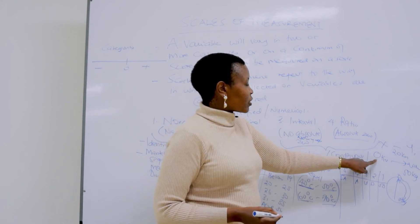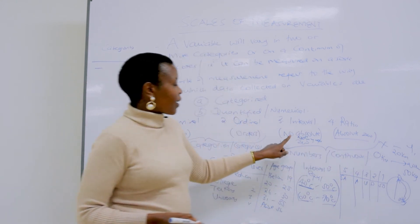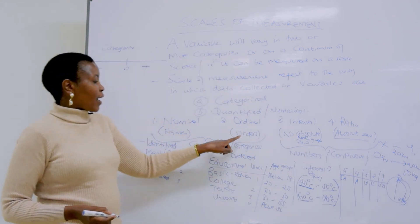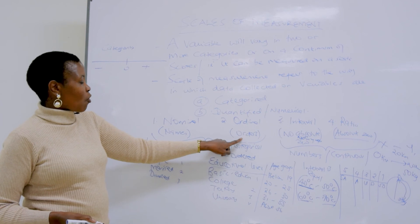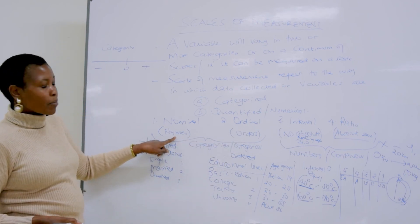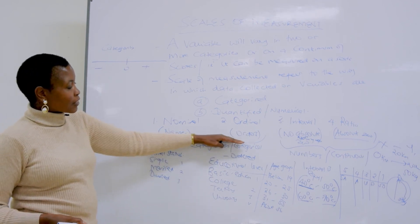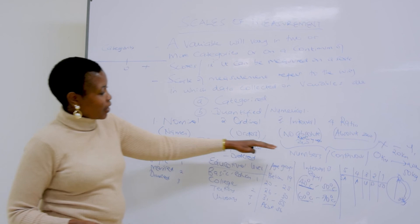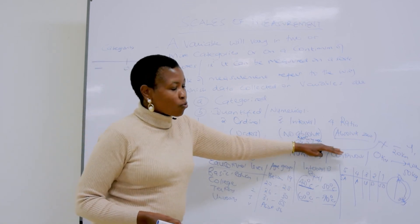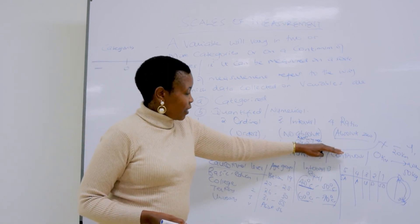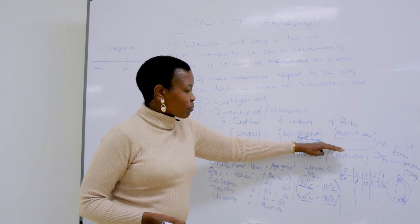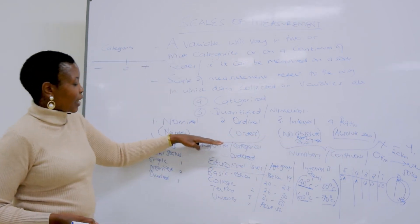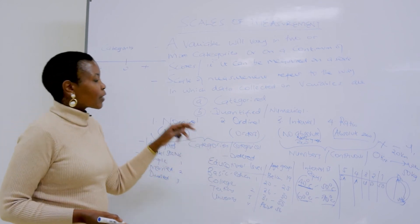So, at ratio there is absolute zero; at interval there is no absolute zero; at ordinal there is some order; at nominal there is no order. The first two — nominal and ordinal — are called categorical, and the last two — interval and ratio — are called continuous, because they exist in numbers.